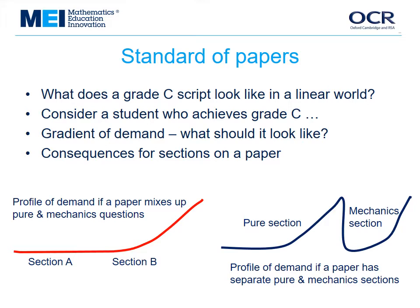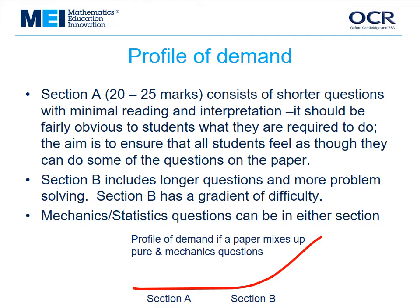It's really important to get the gradient of demand of a paper right, with a run of straightforward questions at the beginning before the more challenging ones begin. The red curve at the bottom left is meant to show that — think of it as going along a runway, gaining momentum before you take off. But if you have a separate mechanics section, your gradient of demand looks like the blue curve on the bottom. What are your students doing halfway through the paper? They're struggling with challenging pure questions before they've even looked at the mechanics questions. We decided it was much more important to have a profile of demand which makes the paper accessible to all students.